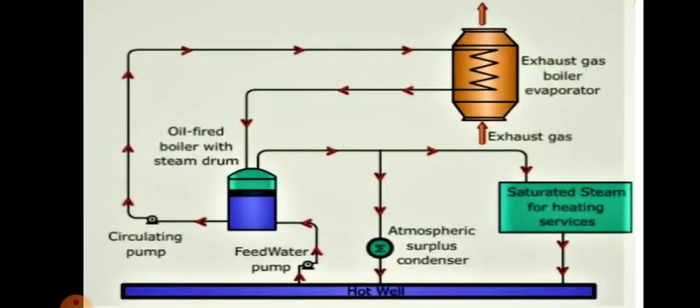Here we can see the exhaust gas boiler evaporator, oil fired boiler with steam drum, and exhaust gas superheater steam for heating services and hot well. From the exhaust gas boiler it goes to the oil fired boiler with steam drum, then to saturated steam for heating services, then to the hot drum. From the hot drum it goes to the feed water pump, back to the oil fired boiler with steam drum, and through the circulating pump it goes again to the exhaust gas boiler evaporator. It is a cyclic process in the exhaust gas boiler.